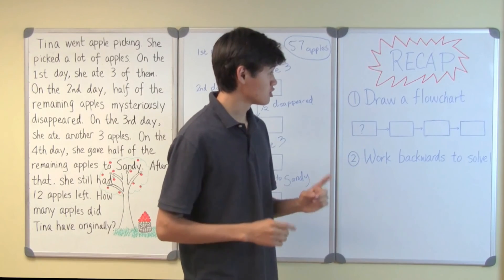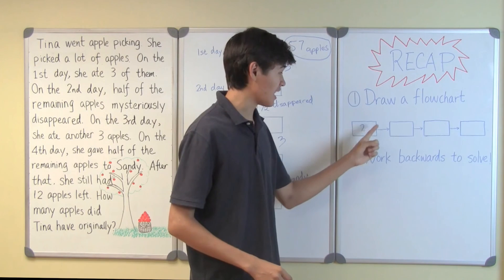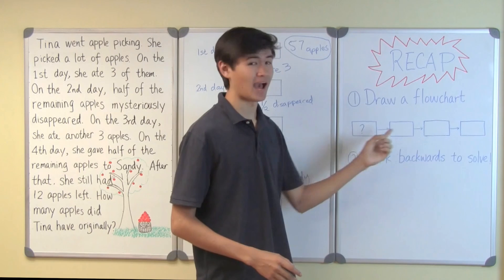Let's recap. First, draw a flow chart using boxes to represent stages and arrows to represent changes. Next, start from the end and work backwards to solve.